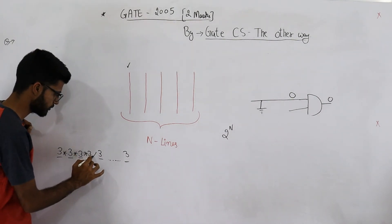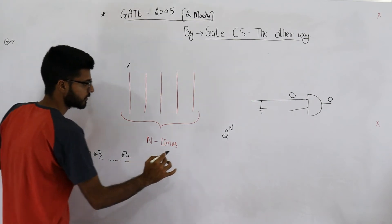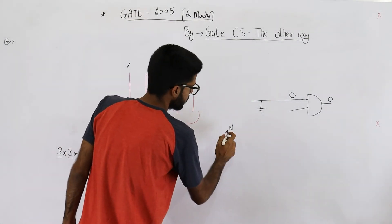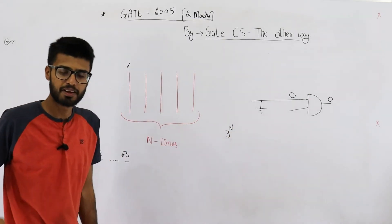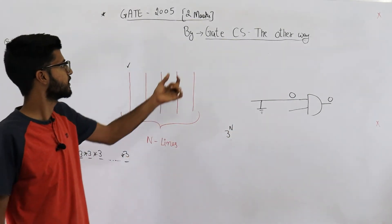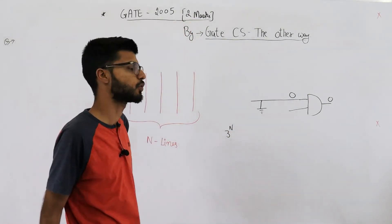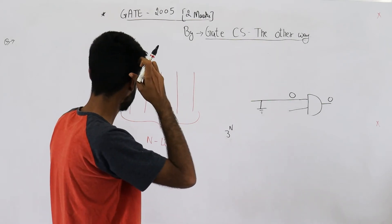threes N times and get this answer 3^N. You'll also find it in options, but this one too is wrong. This is the reason this simple question is for two marks - because you might make a mistake here.